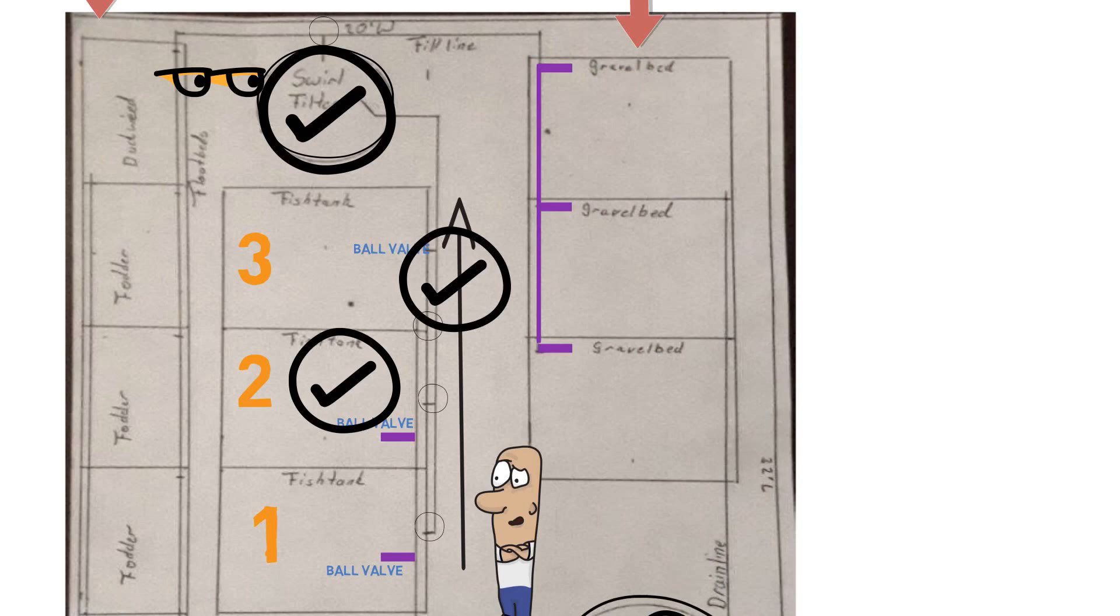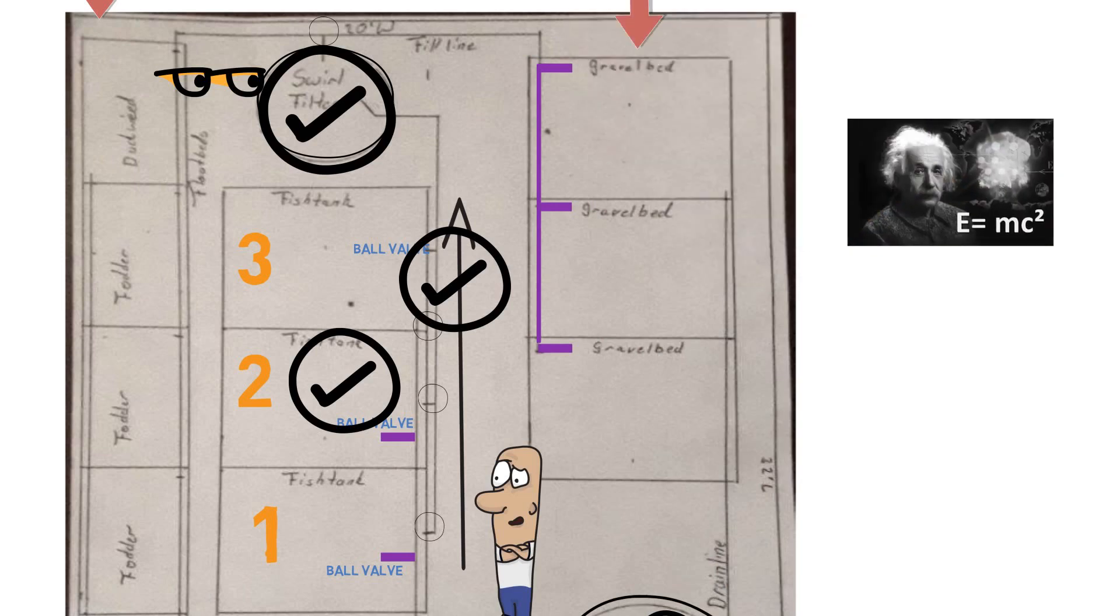I don't know if these are flooding drains or if these are just continuously flowing media beds. But if they're flooding drain, you definitely going to have to do some Einstein E equals MC squaring to figure out the correct flow rate for each one of these gravel grow beds.